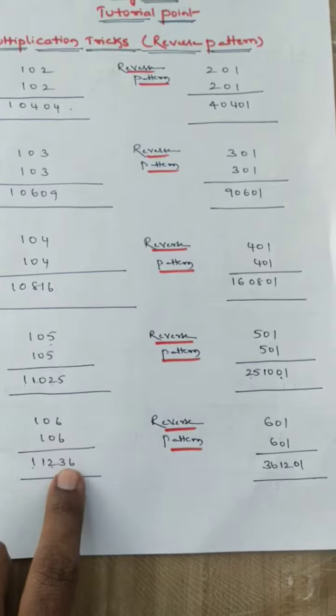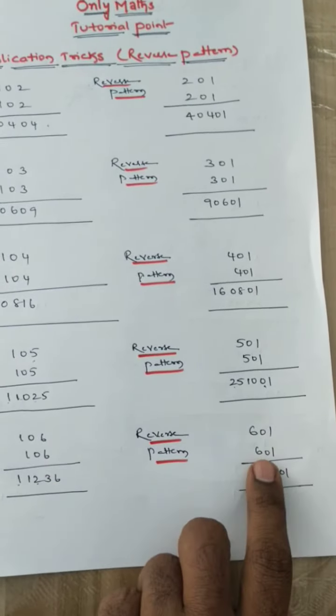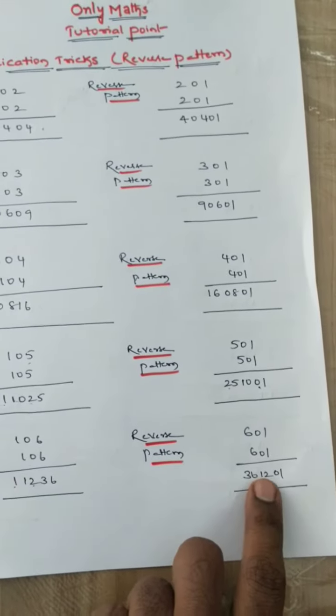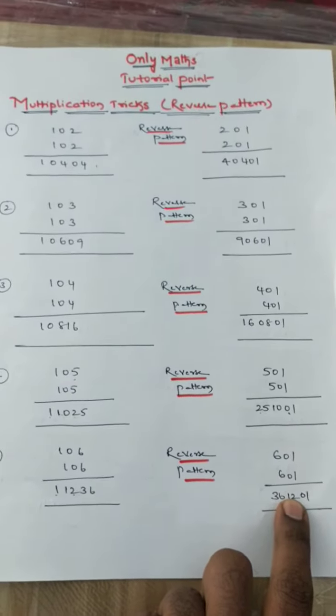106 into 106, you get 1, 6 plus 6 is 12, 6 into 6 is 36. Here 601 to 601, what we get? 36, 12, well 1 we can return as 0, 1. Thank you students.